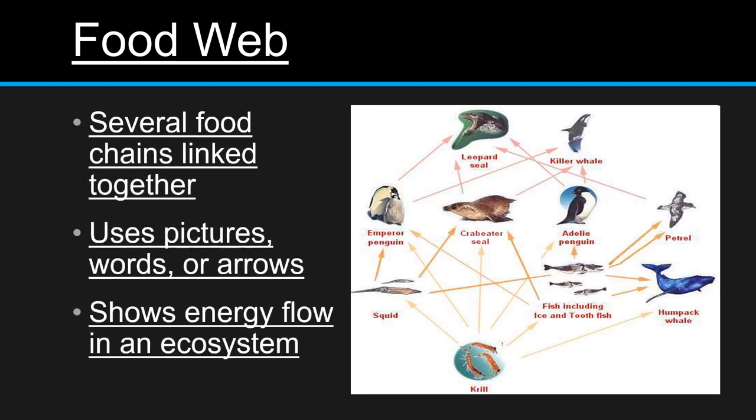These food webs are made of several food chains linked together. They're going to use pictures, words, or arrows and show how energy flows in an ecosystem. As you can see from our example here, it flows in a lot of different ways. Different animals eat different things at different times.